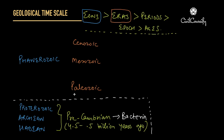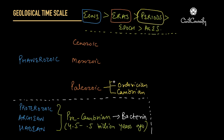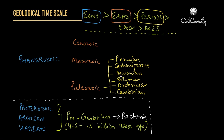Let us begin with the oldest one, which is the Paleozoic era. Paleozoic has 6 periods starting from the oldest: the Cambrian period, the Ordovician period, the Silurian period, the Devonian period, the Carboniferous period, and the Permian period. The Cambrian, which is the oldest period of the Phanerozoic Eon, started about 570 million years ago and was famous for the sudden increase in diversity of many animal phyla — also known as the Cambrian explosion.